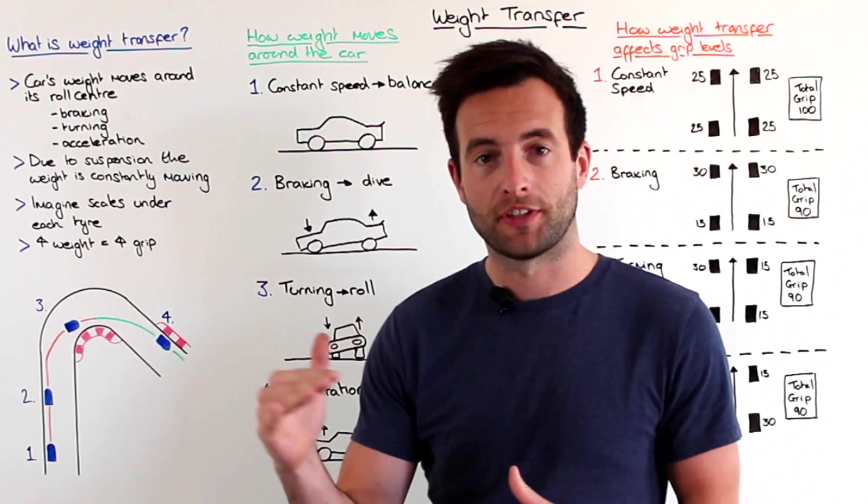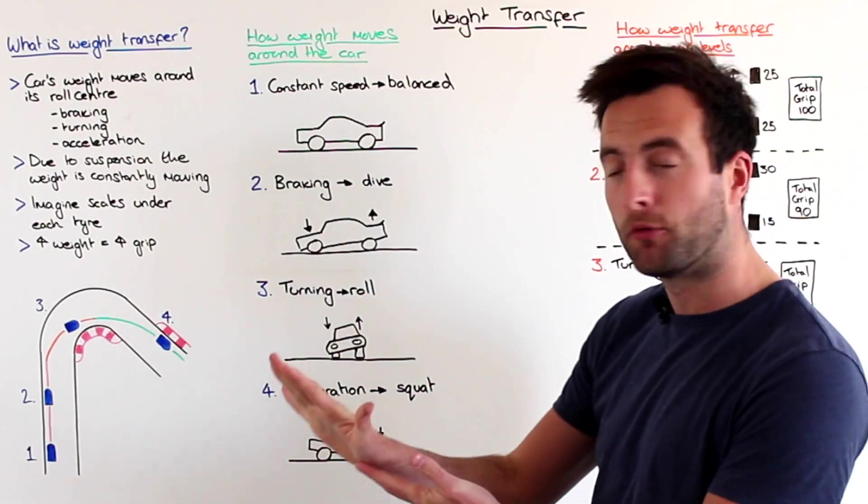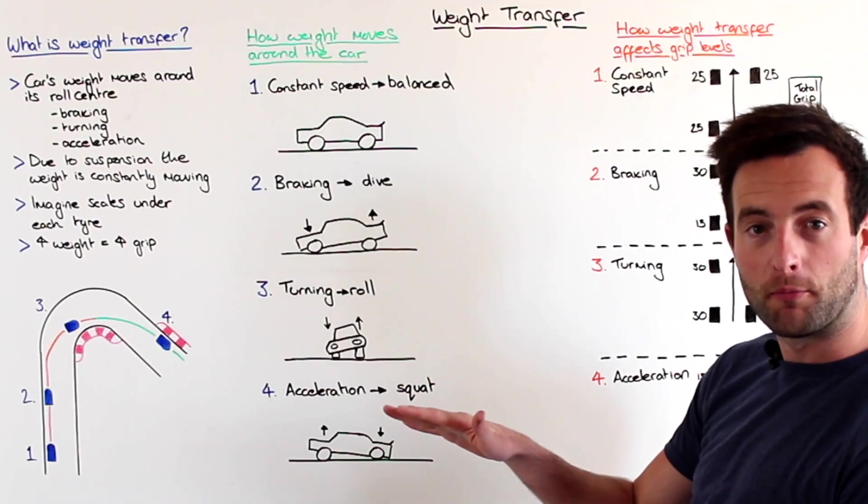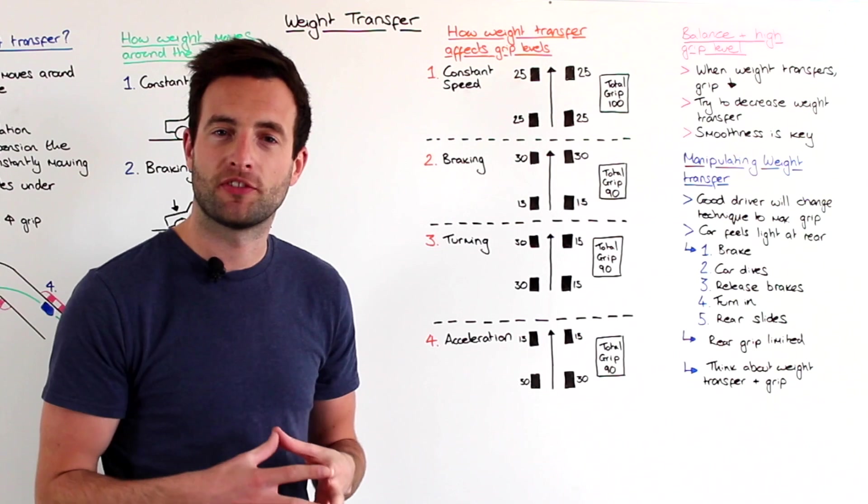Then the car travels out the corner and once it's in a straight line again, the driver will be flat out on the accelerator and the rear of the car will compress, the springs at the back will compress and we call this squat.